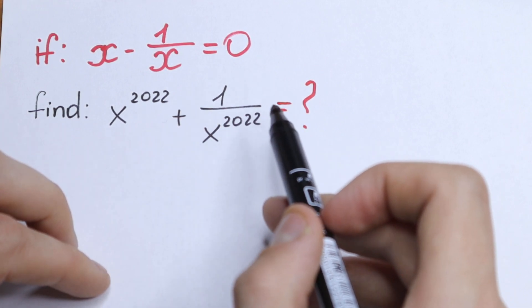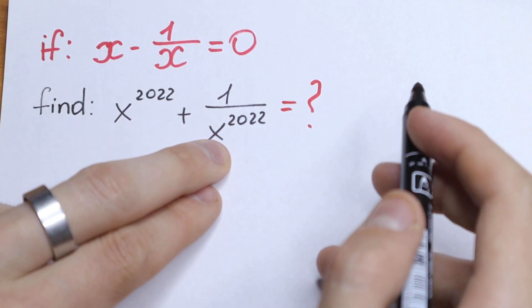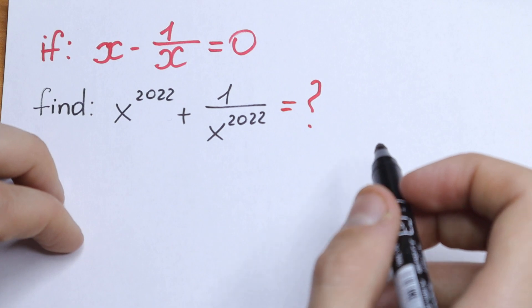On the first side, this question is really hard because we have huge power right here, huge power in our denominator, but we can easily solve it step by step.